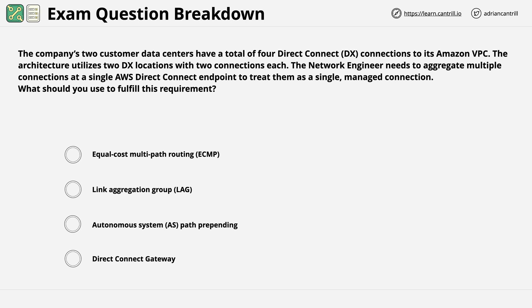AS path prepending is a feature of BGP which allows you to manipulate the protocol so that you can deprioritize a route, which influences which path is used for traffic.